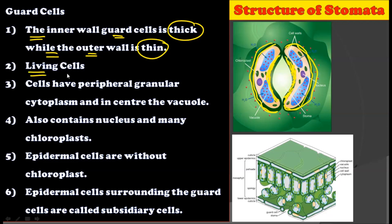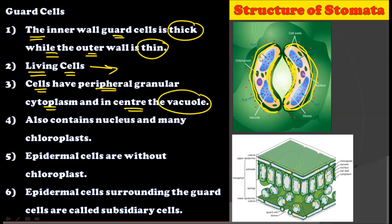Secondly, these guard cells are living cells — they have all the living components and regular metabolic processes occurring in them. These cells have peripheral granular cytoplasm and in the center, the vacuole. As you can see here, these cells have the peripheral granular cytoplasm and a vacuole in the center of the guard cells. The cytoplasm, which is granular in nature, is present in the periphery at the boundaries of the cell, while the central area of the guard cell is covered by the vacuole.